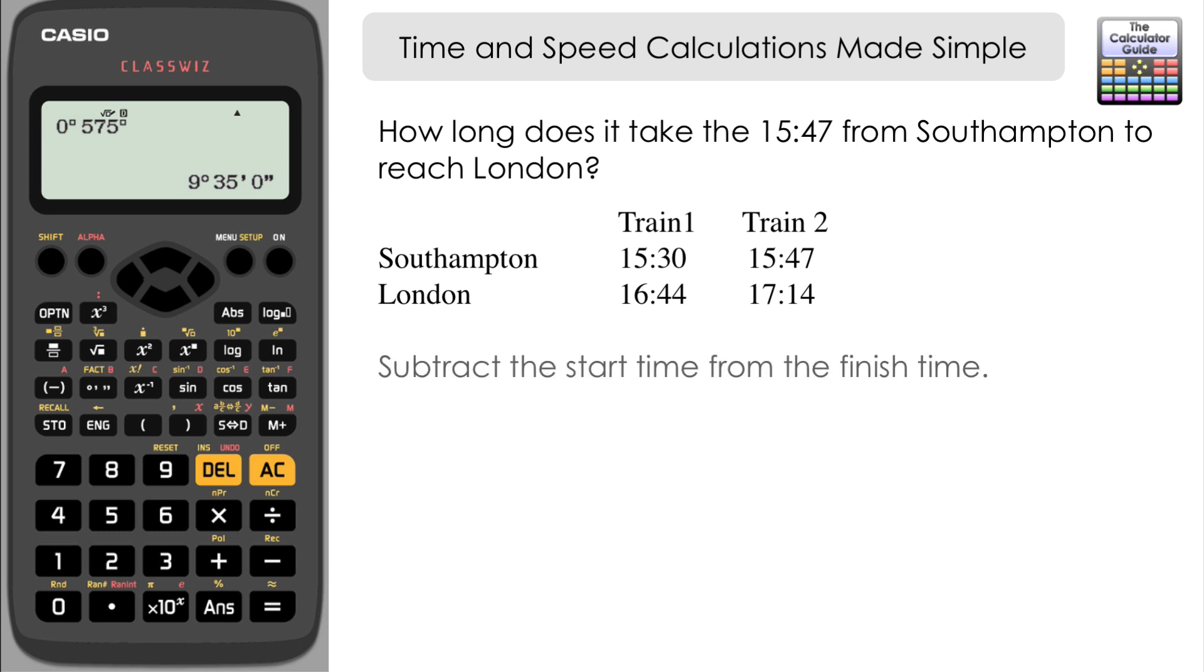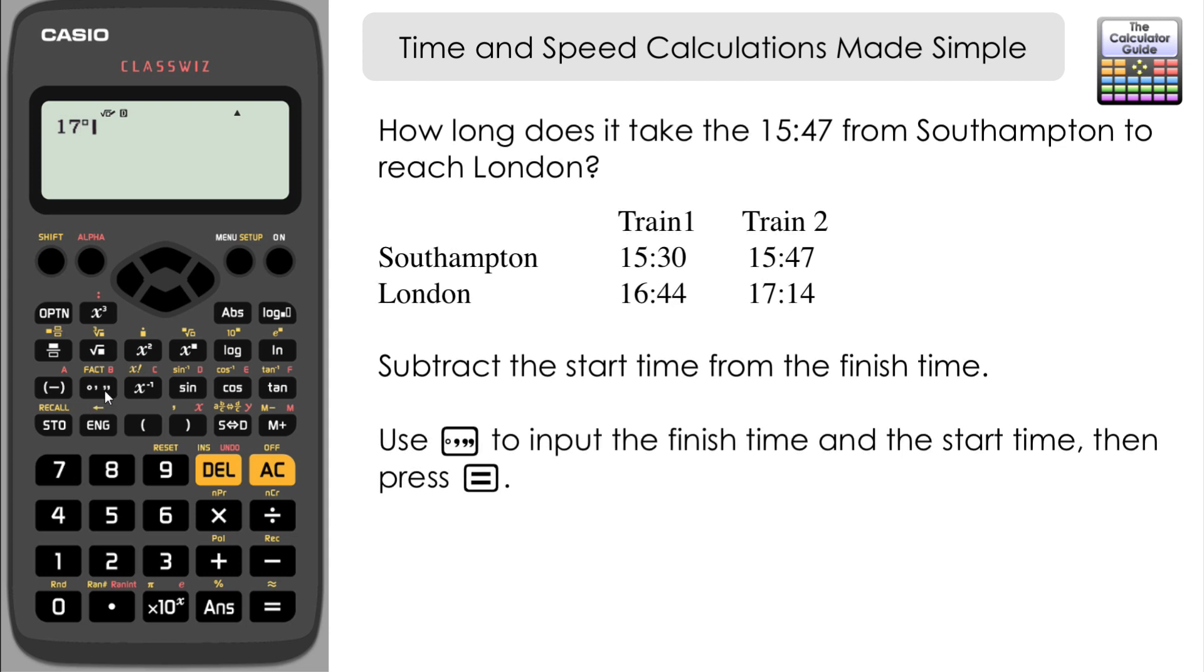The difference involves a subtraction, so we can put that in using the degrees minutes and seconds button. We can say 17 hours 14 minutes subtract 15 hours and 47 minutes. That's end time or finish time minus start time. What's the difference? It's 1 hour 27, so it takes the train 1 hour 27 minutes to get from Southampton to London.